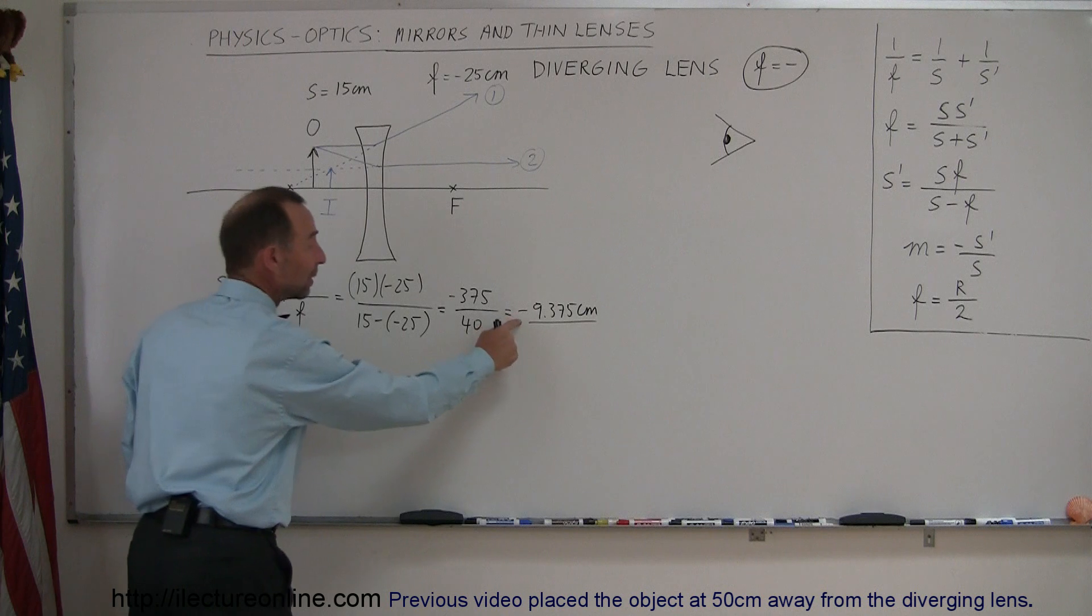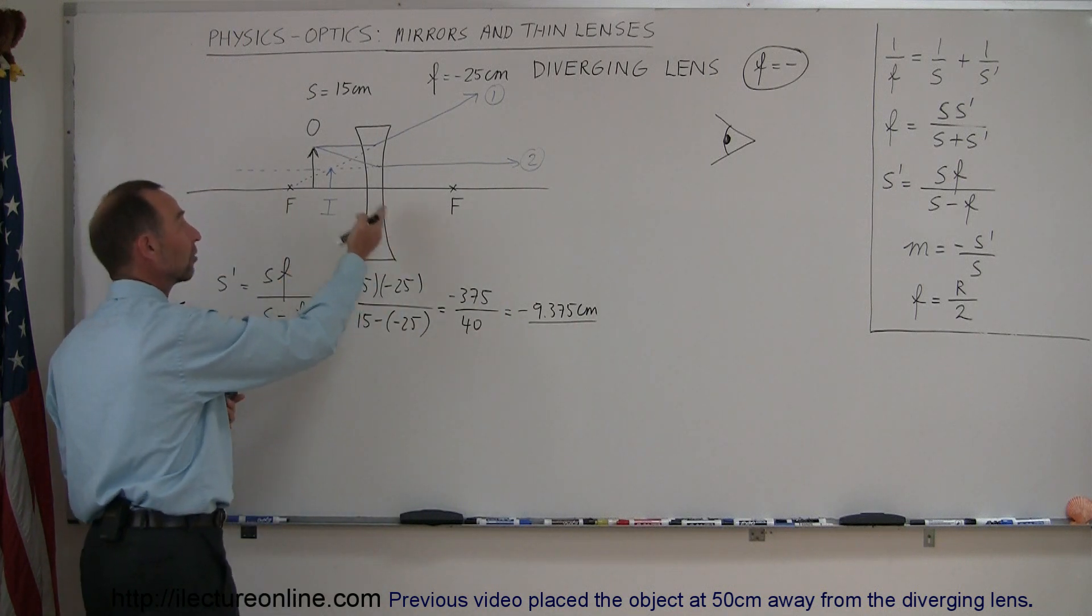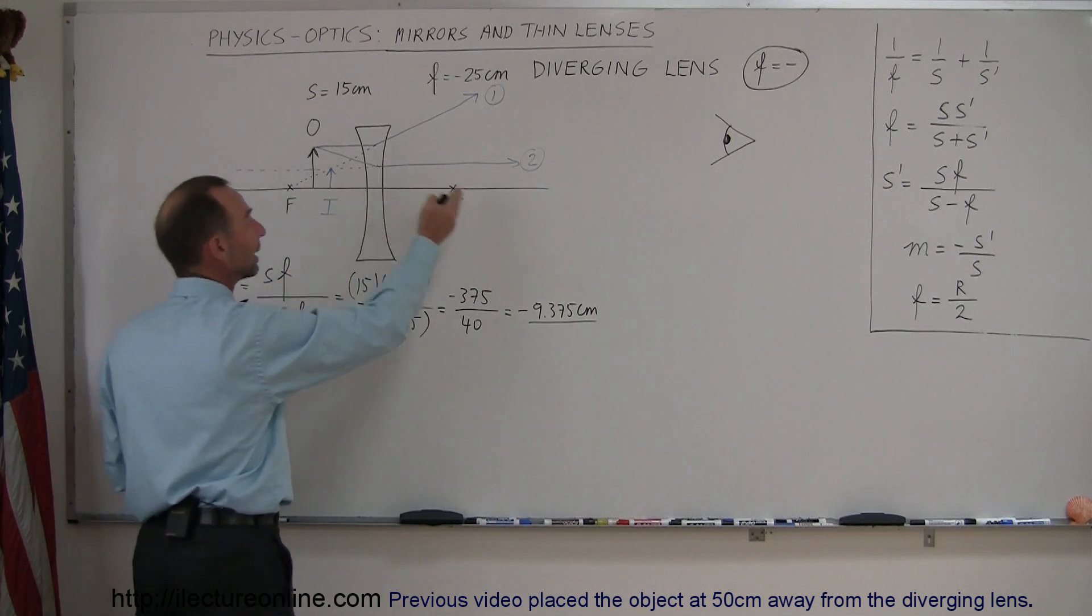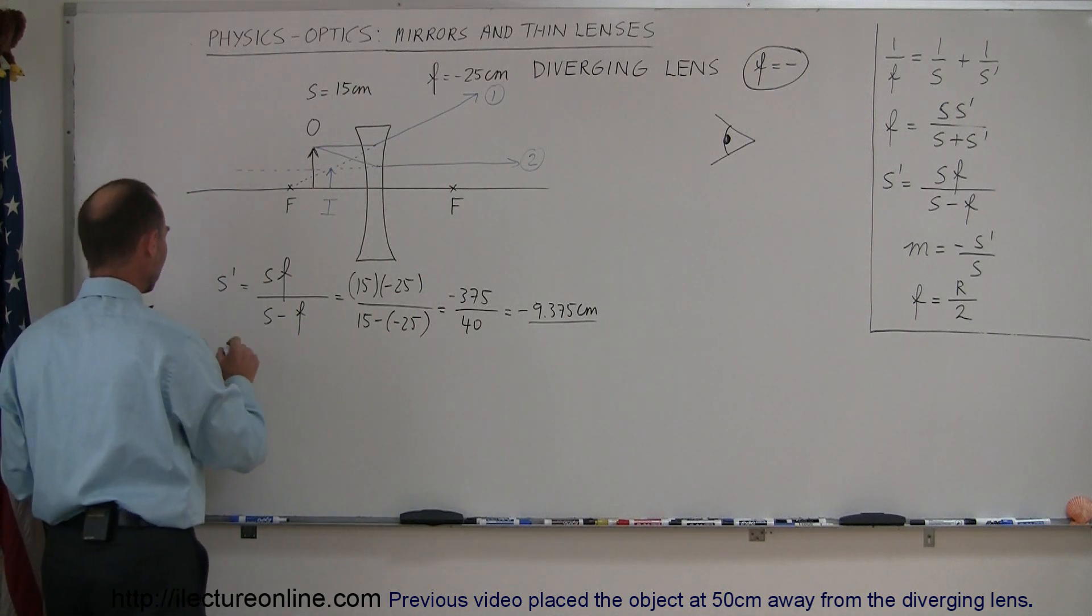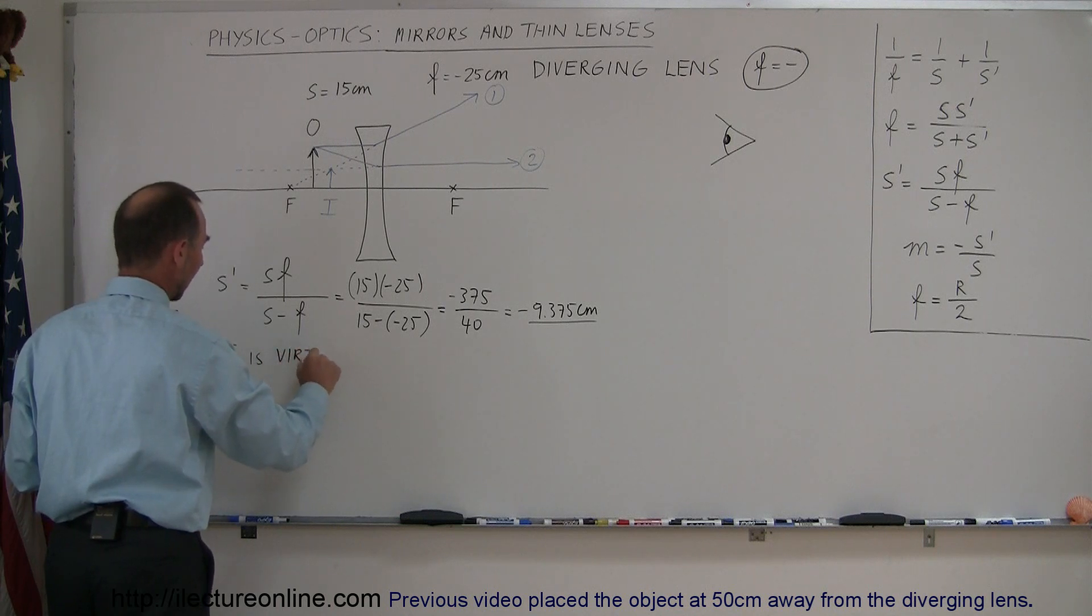Also, the fact that this is negative means that this is a virtual image, because it's in front of the lens, not behind the lens where it actually would be formed. So we know now that the image is virtual. I is virtual. Not real.